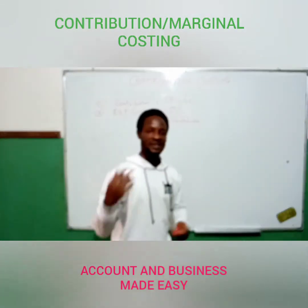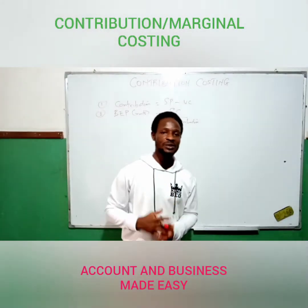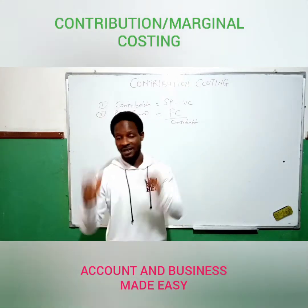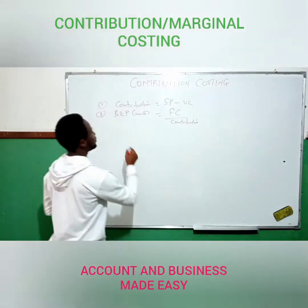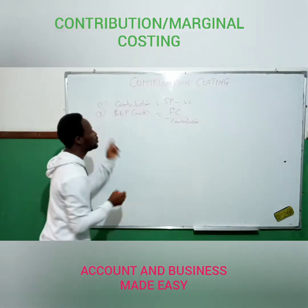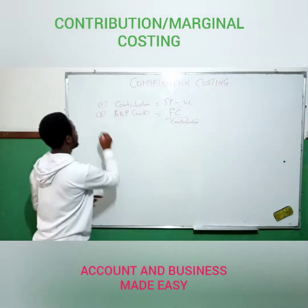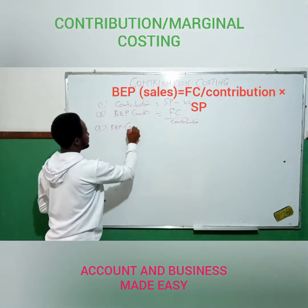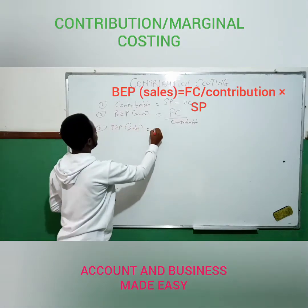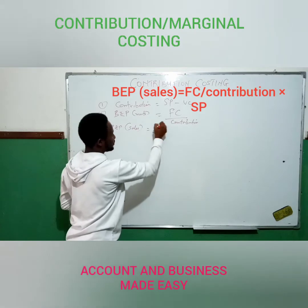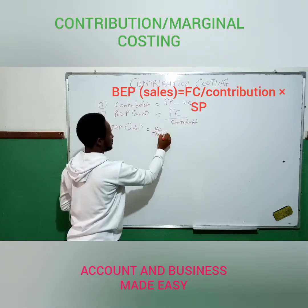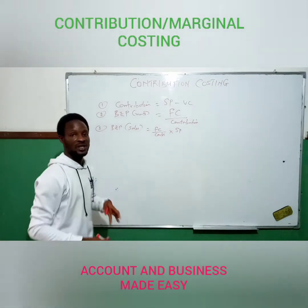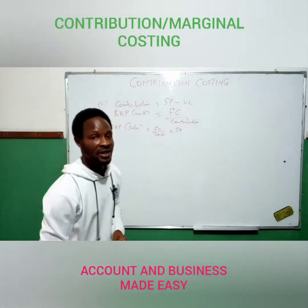Break-even point in sales is the amount of sales that will be generated that gives us no loss and no profit. That is: fixed cost divided by contribution, then multiplied by selling price. So break-even point in sales equals fixed cost divided by contribution, multiplied by selling price.